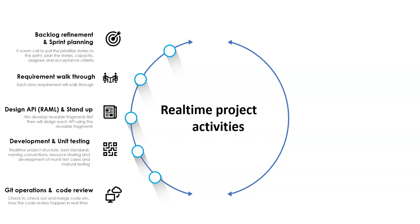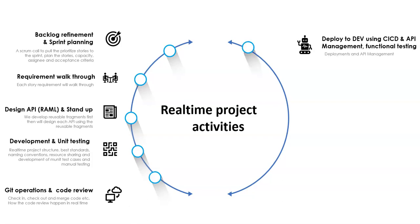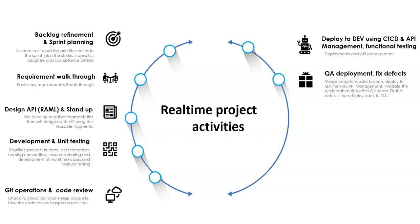The team lead will do the code review and comes back with code review comments. If there are any code review comments, the developer must take care of those improvements, then again commit code back to the Git repo and update the team lead. Once the team lead sign-off is done, the developer will deploy code to the develop branch using CI/CD, take care of API management, and validate the services in the dev environment. Once everything looks good, the developer will merge code to the master branch.